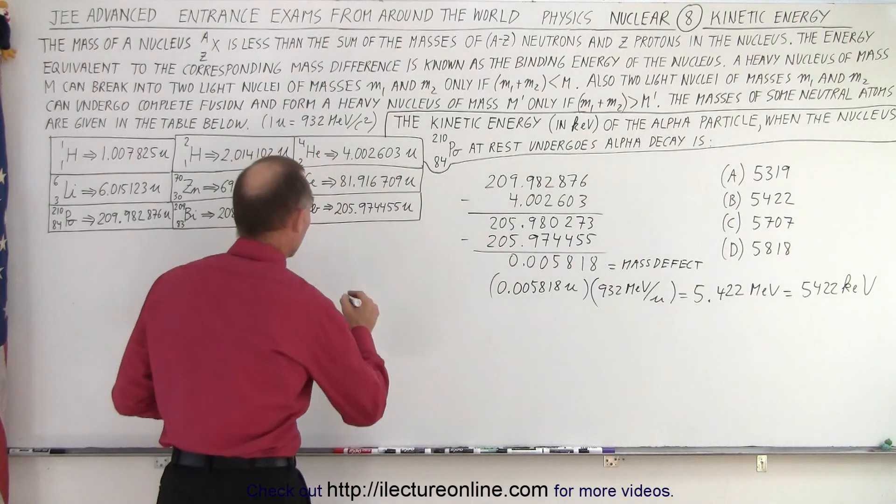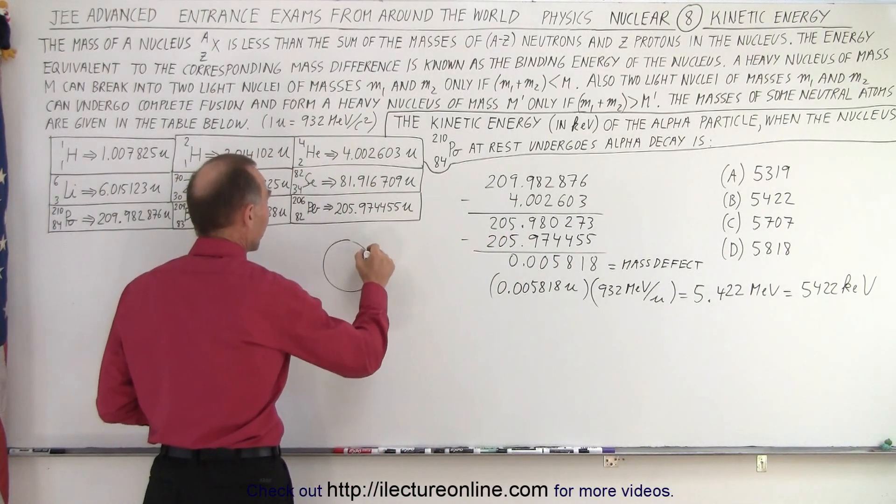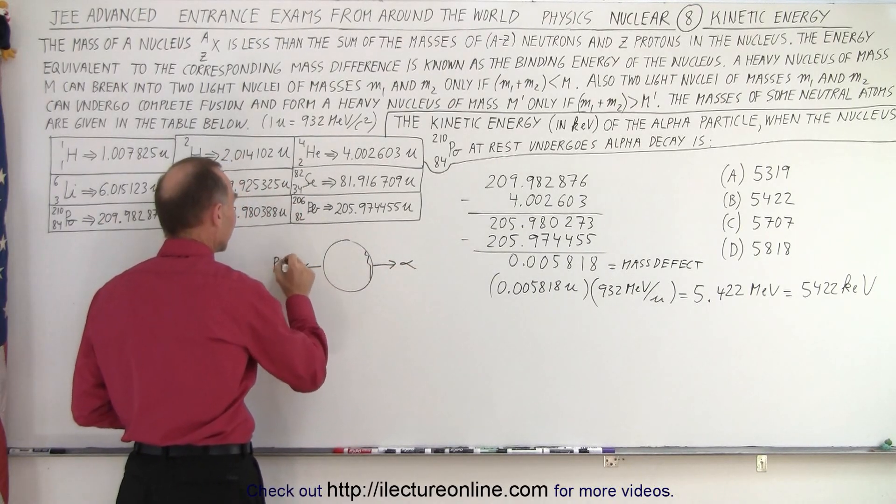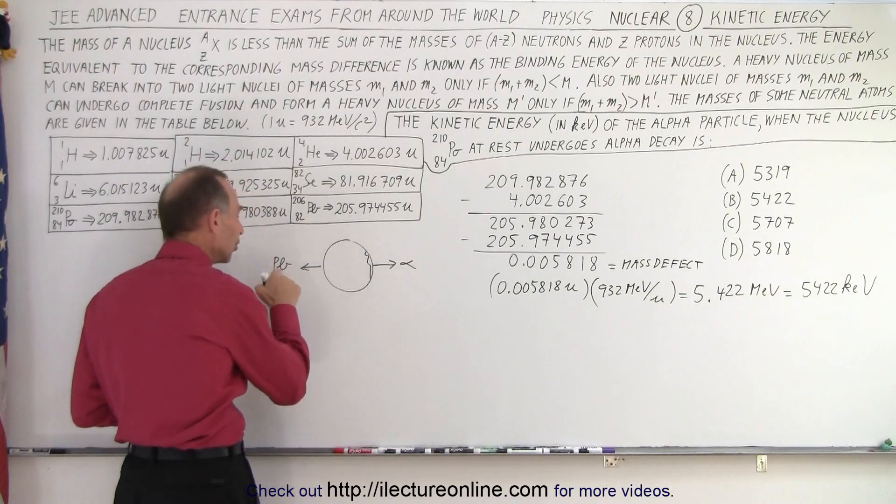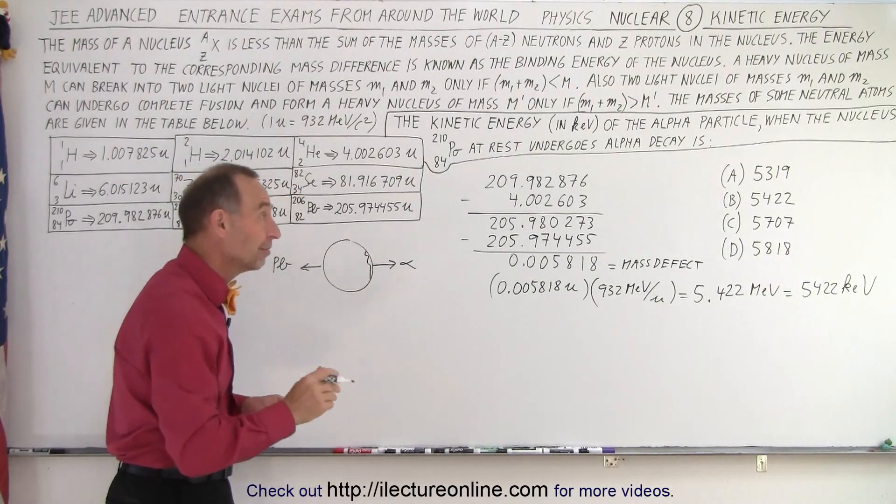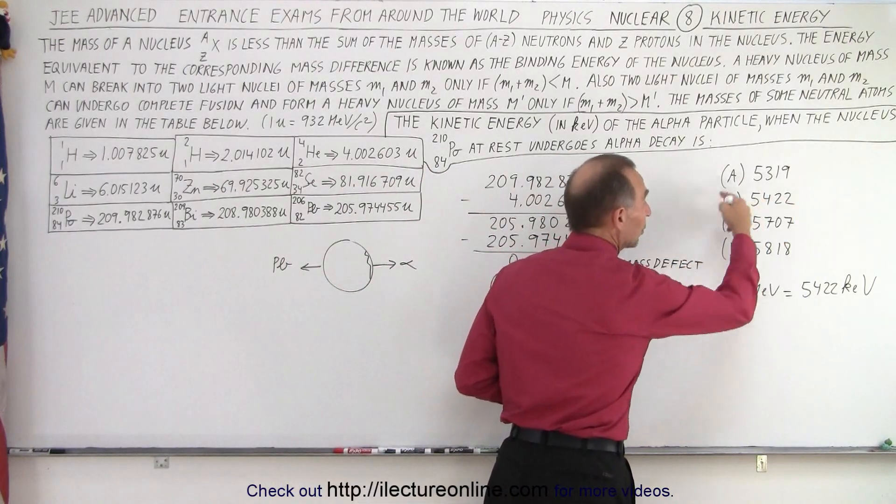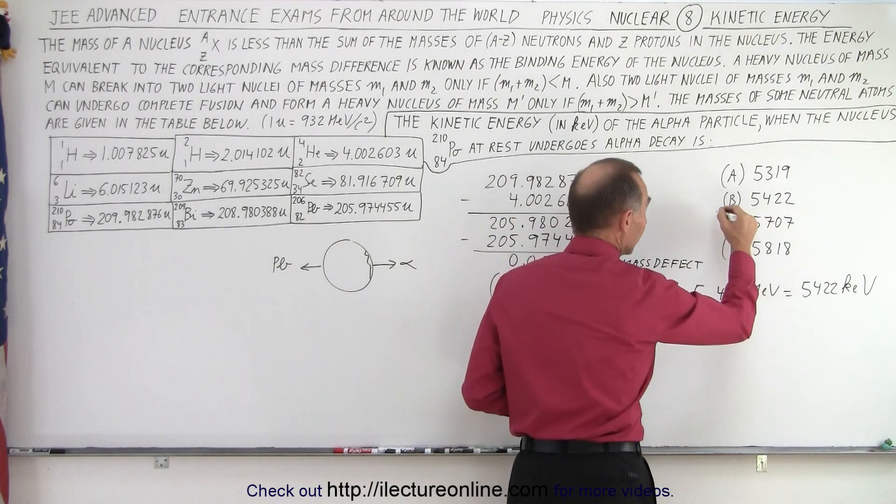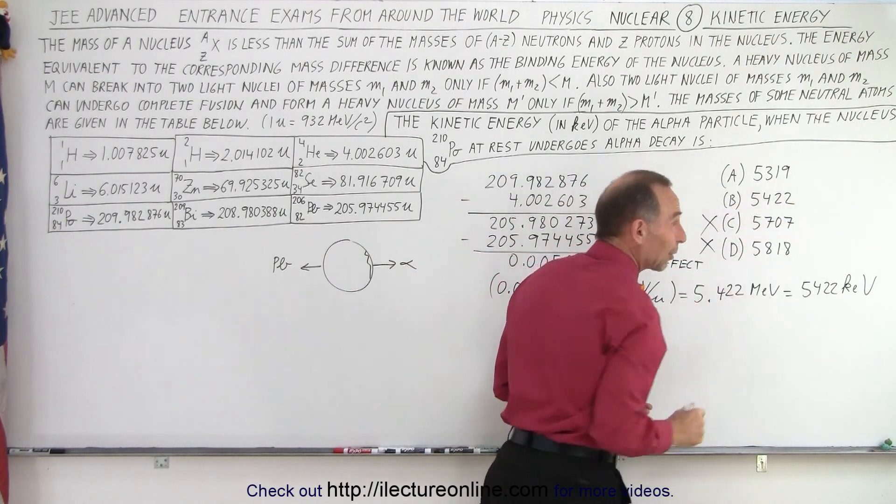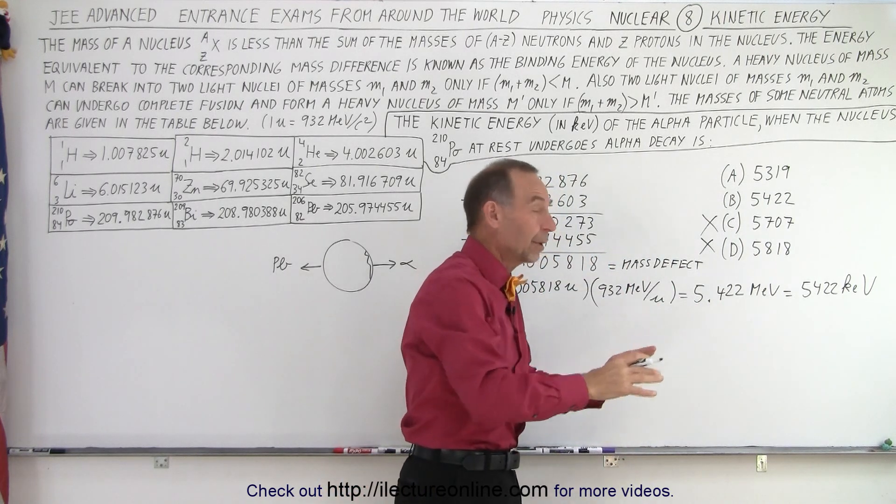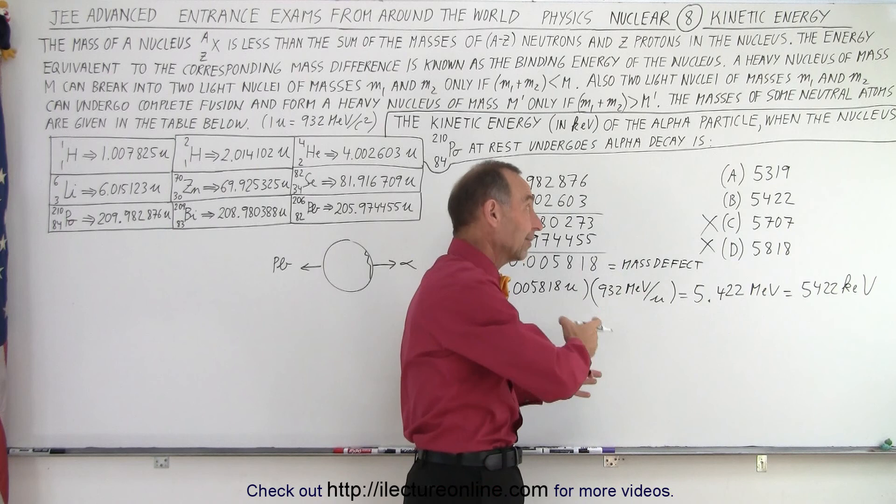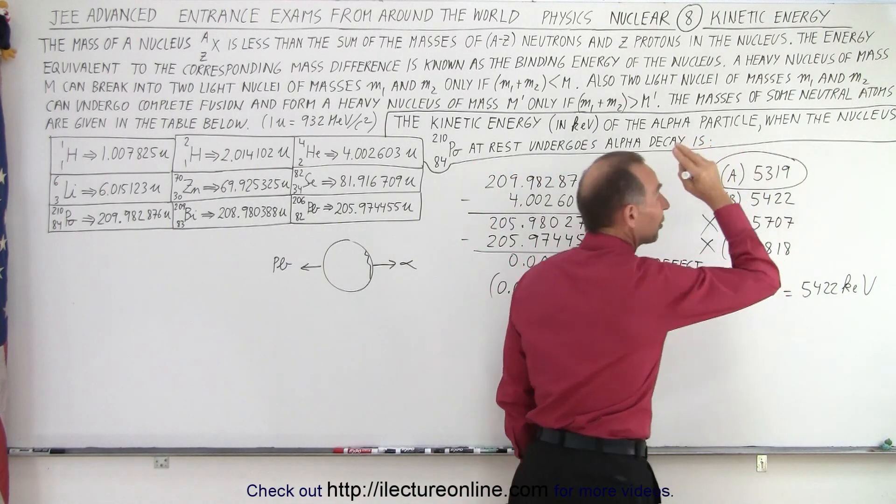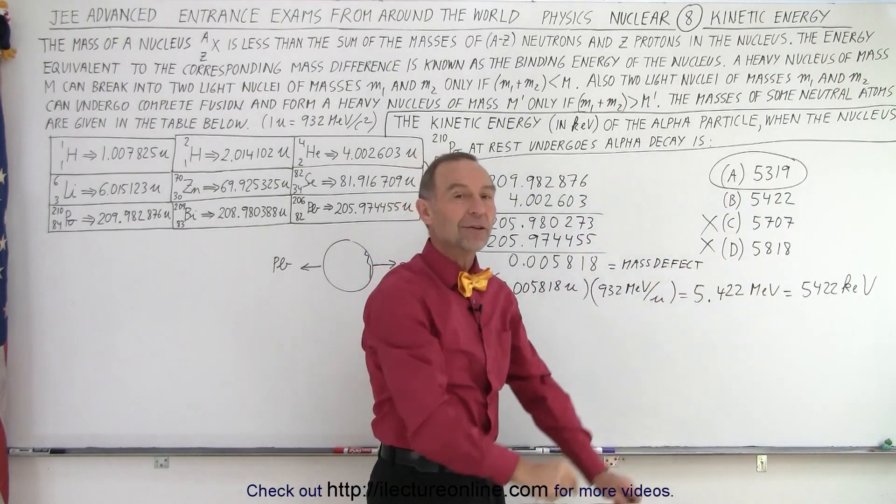For simplicity, we know that most of it goes to the alpha particle, but not all of it. Some of it also goes to the lead nucleus that is left over. So we have polonium, and then splits up into an alpha particle that goes one direction, and in the other direction, we have the lead. Notice that some of the kinetic energy goes into lead. Only a small fraction of it, but enough to make this the wrong answer. When you think about it, the only plausible answer at this point is A, because the other two are bigger, so you know these cannot be correct.